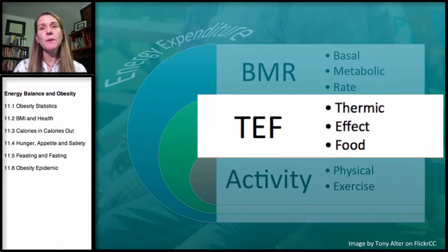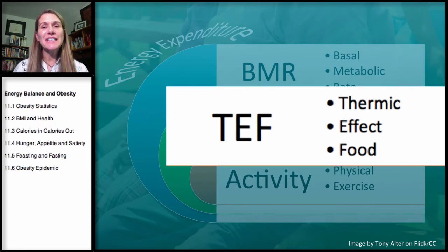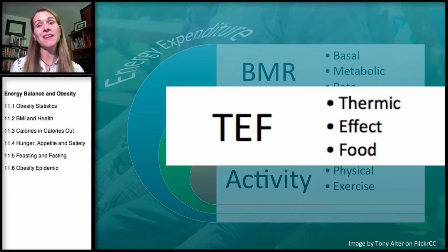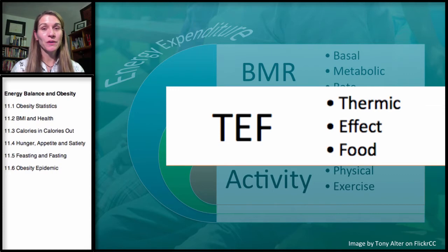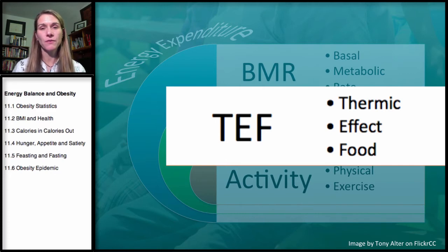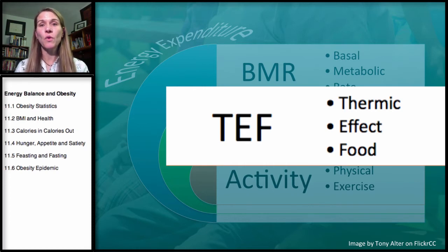The thermic effect of food is the energy it takes for us to break down our food — digesting, absorbing, and metabolizing it for energy. Not all macronutrients contribute equal amounts of calories, and they're metabolized differently. So different food combinations provide a different thermic effect, meaning you may burn more energy breaking down and utilizing certain foods.